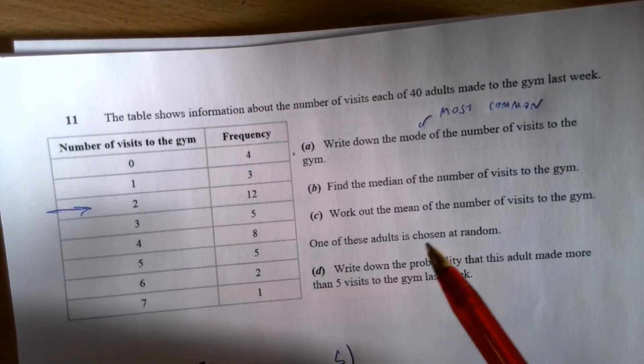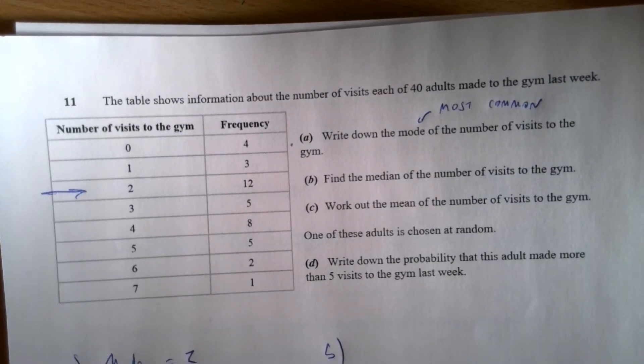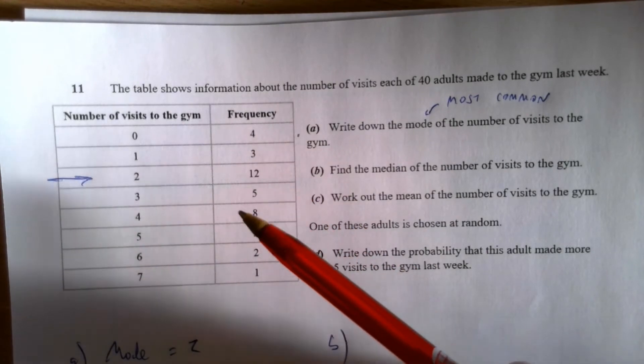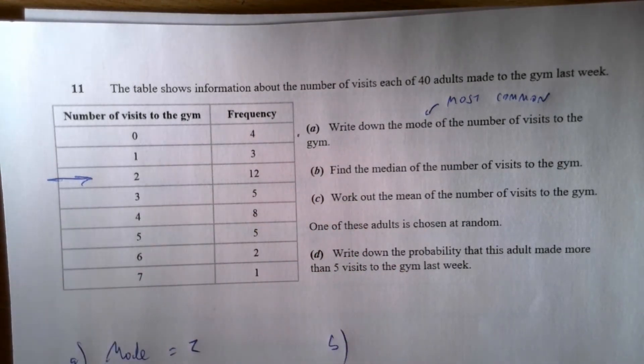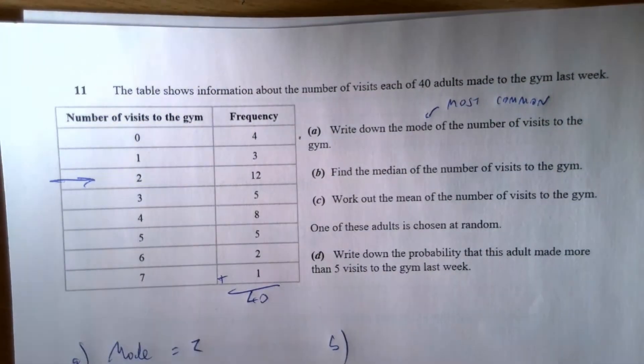Part B, find the median of the number of visits to the gym. To work out the median, we need to go halfway up the total frequency. We do that by finding the total frequency and then halving it. The total frequency is going to be the sum of all of those frequencies. So 4 plus 3 plus 12 plus 5 plus 8 plus 5 plus 2 plus 1, that gives me 40. That is the total frequency.